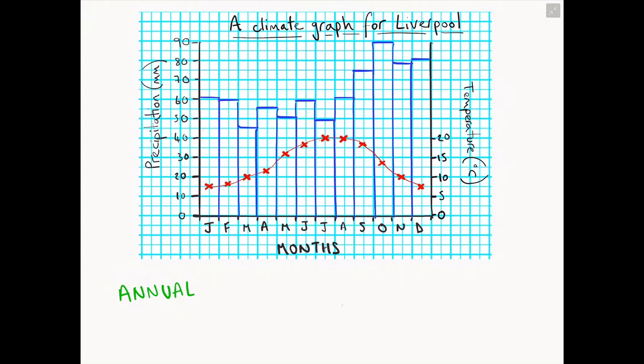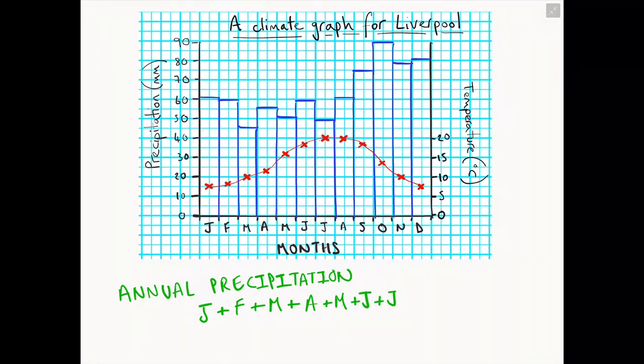A more challenging question we may be asked is to state the annual precipitation for Liverpool. Annual means the total value of the entire year. So in this particular case, the examiner is looking for you to show some working out and some readings and interpreting your climate graph. You will need to find the precipitation rate for each month of the year—January, February, March, so on and so forth, all the way to December—and add them all up to give you a total precipitation.